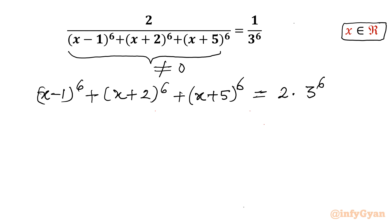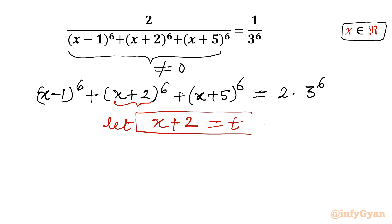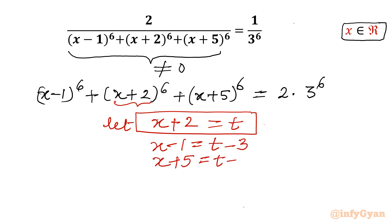Now let us use our substitution. As the middle point of minus 1, 2, and 5, I will consider that bracket equal to t. So x plus 2 equal to t is my substitution. From here I will write x minus 1, which will be t minus 3, and x plus 5 will be t plus 3.